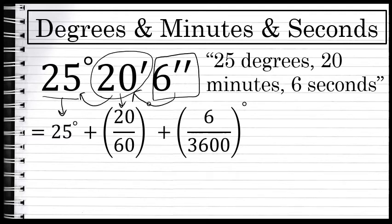And this last part says 6 over 3600. Where did this 3600 come from? Well, a minute is a 60th of a degree, and a second is a 60th of a minute, so a second is actually...